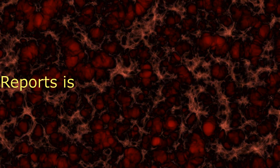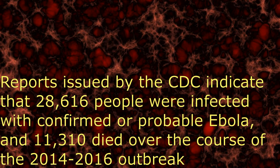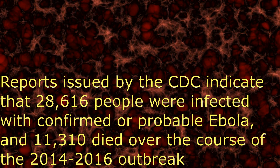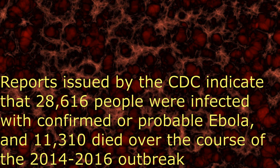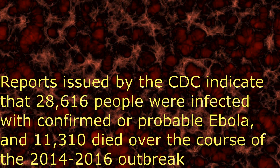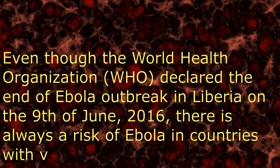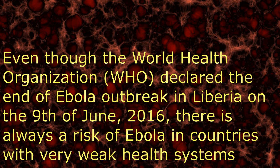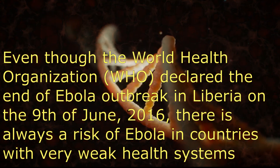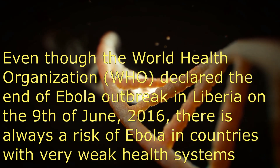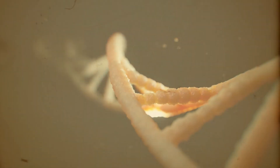Reports issued by the CDC indicate that 28,616 people were infected with confirmed or probable Ebola, and 11,310 died over the course of the 2014–2016 outbreak. The World Health Organization declared the end of the Ebola outbreak in Liberia on the 9th of June, 2016. However, there is always a risk of Ebola in countries with very weak health systems and where the virus is prevalent in wild animals.